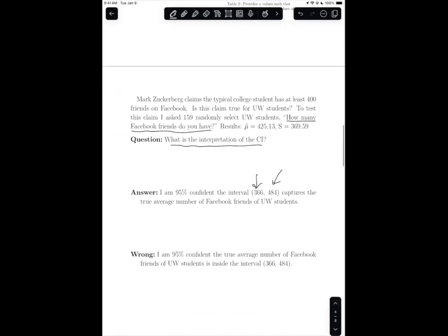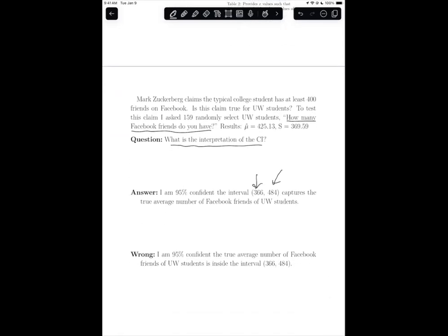Now, it's very common to think, well, that's the same thing as saying I'm 95% confident the true average number of Facebook friends of UW students is inside the interval. But this is actually incorrect. And the reason for this is where is the uncertainty?